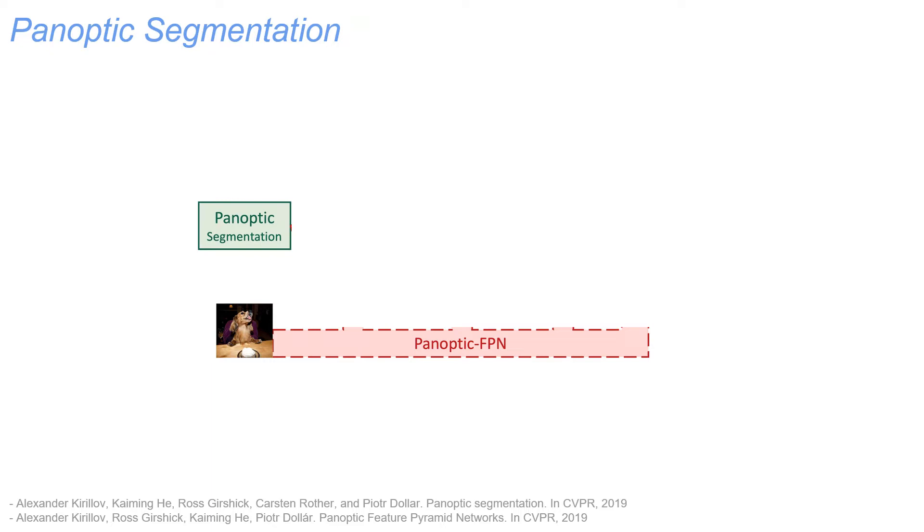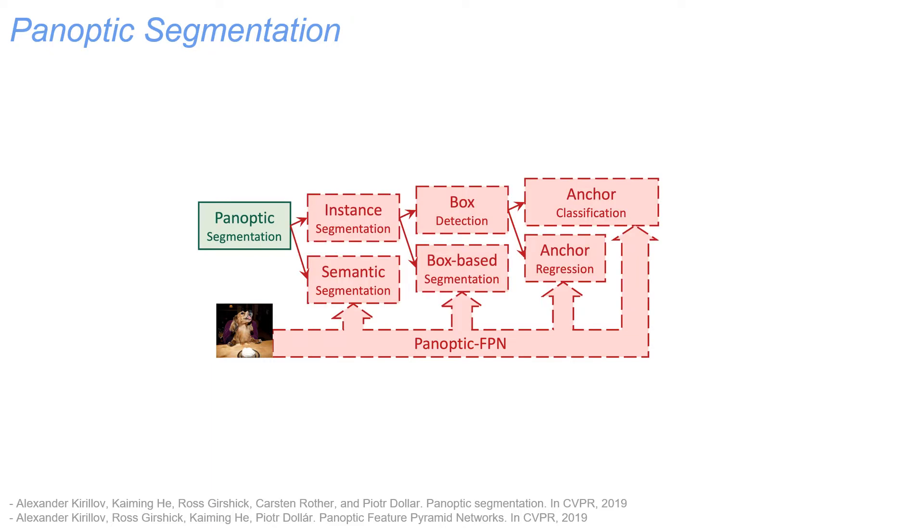Due to the complexity of the problem, previous approaches usually adopt a tree of surrogate subtasks. For example, Panoptic FPN divides into semantic and instance segmentation, which is further divided into even more tasks. The whole process is not only complex, but also introduces many hand-designed priors when merging results from different stages.